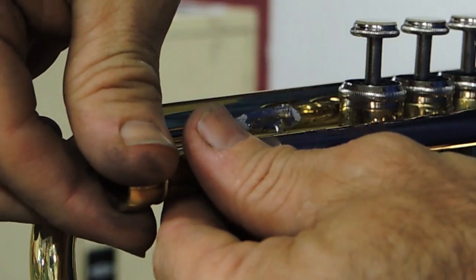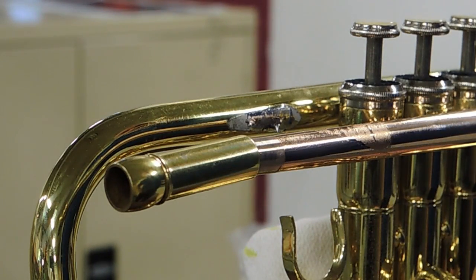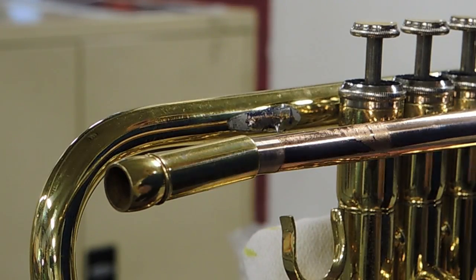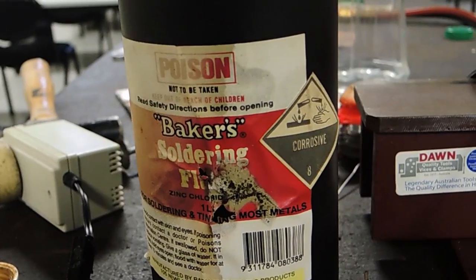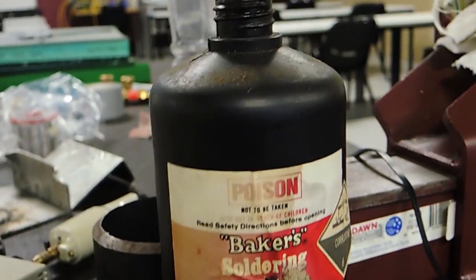There's a couple of different soft solders. You have 50-50 which is generally used for plumbers, and then the 60-40 which is getting closer to the eutectic is used for fine work and particularly for electrical. The eutectic is 66-34.